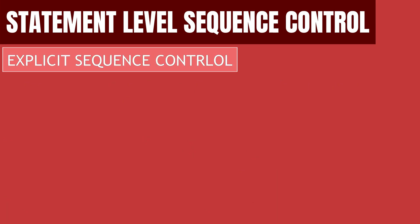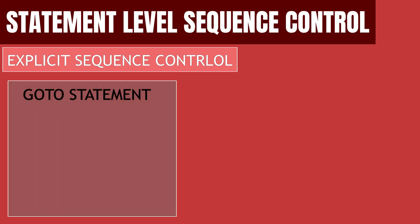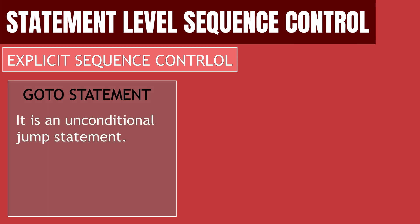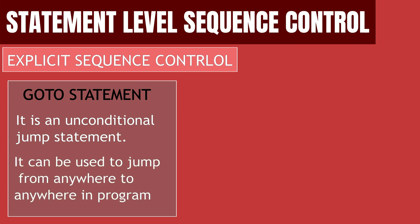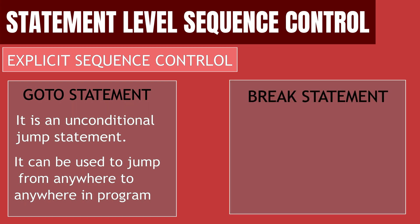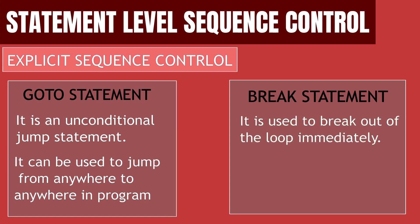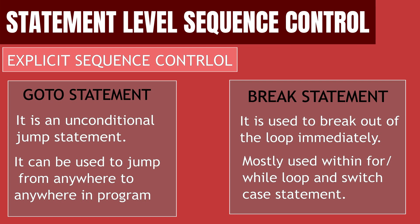Next, let's have a look at the explicit sequence control methods. The first in this method is the goto statement. The goto statement is an unconditional jump statement, which is used to jump from any piece of code to anywhere else, although it is not used much today. Break statements are also part of statement level sequence control along with the basic statement sequence control. It can be used to break the flow of the program and continue from the next block of code. This is used mostly inside loops and conditions.